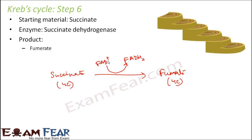Just like NADH — nicotinamide adenine dinucleotide — FADH2 is also a high-energy molecule. One NADH can give rise to three ATP molecules, and one FADH2 can give rise to two ATP molecules. Here the products formed are fumarate and FADH2, which will help in ATP synthesis.